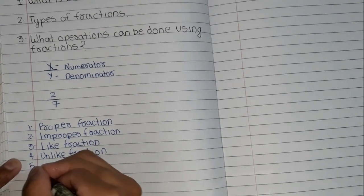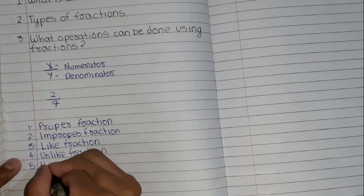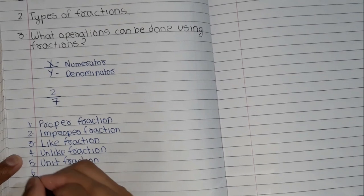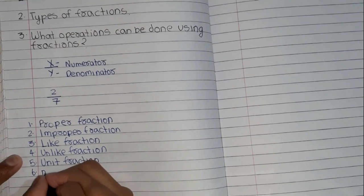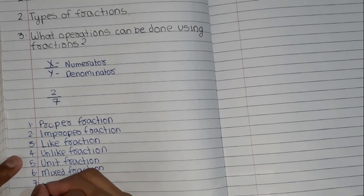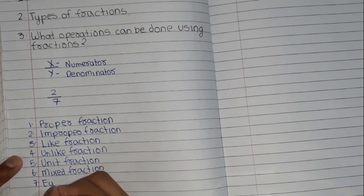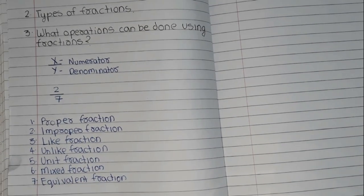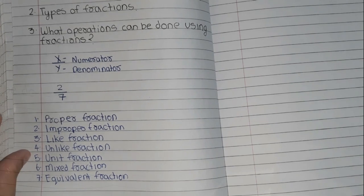Fifth one is unit fraction, sixth one is mixed fraction, and the seventh one is equivalent fraction. So there are 7 types of fractions.